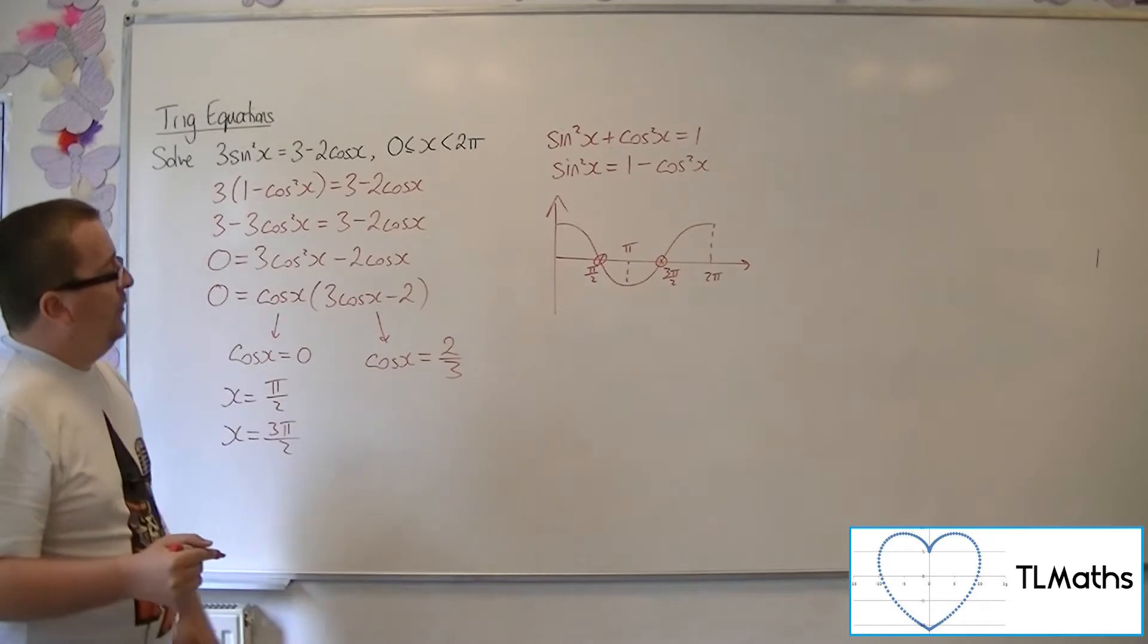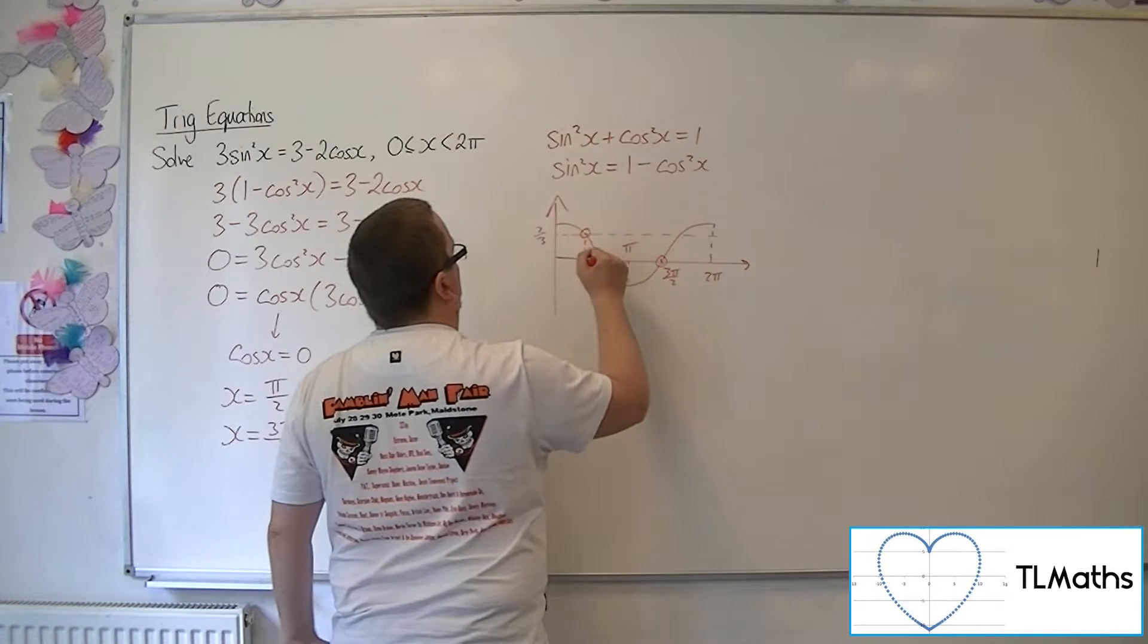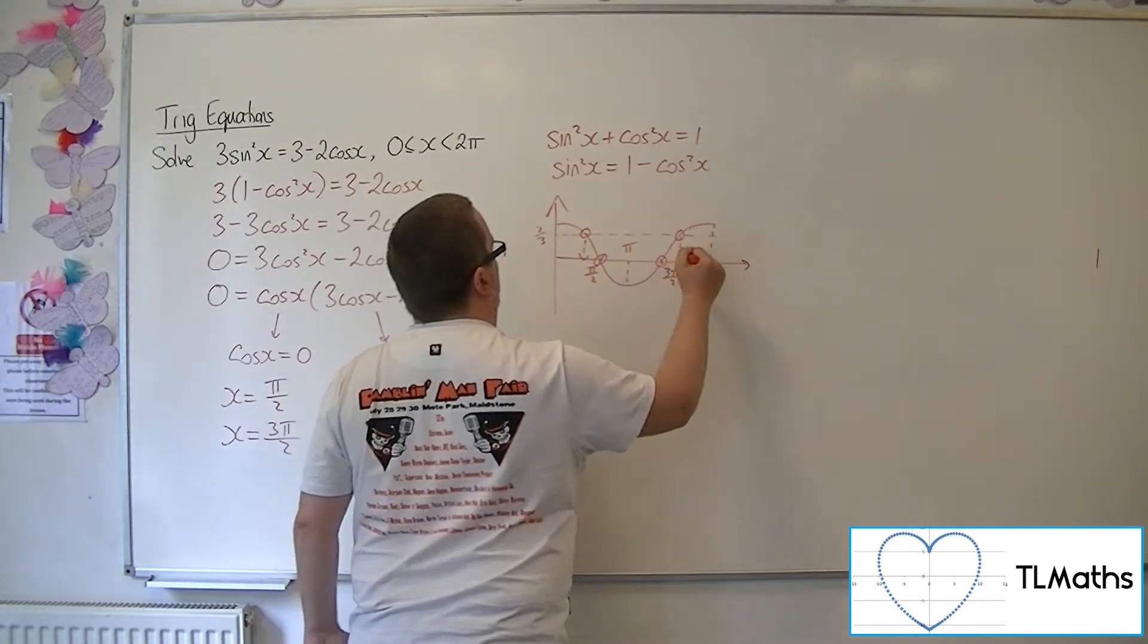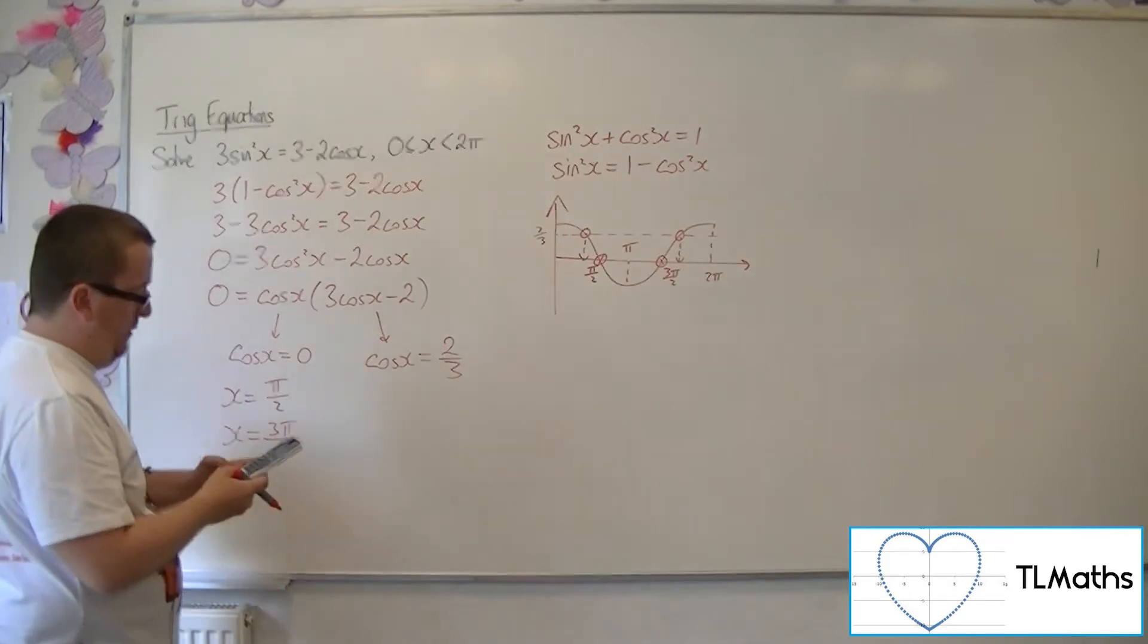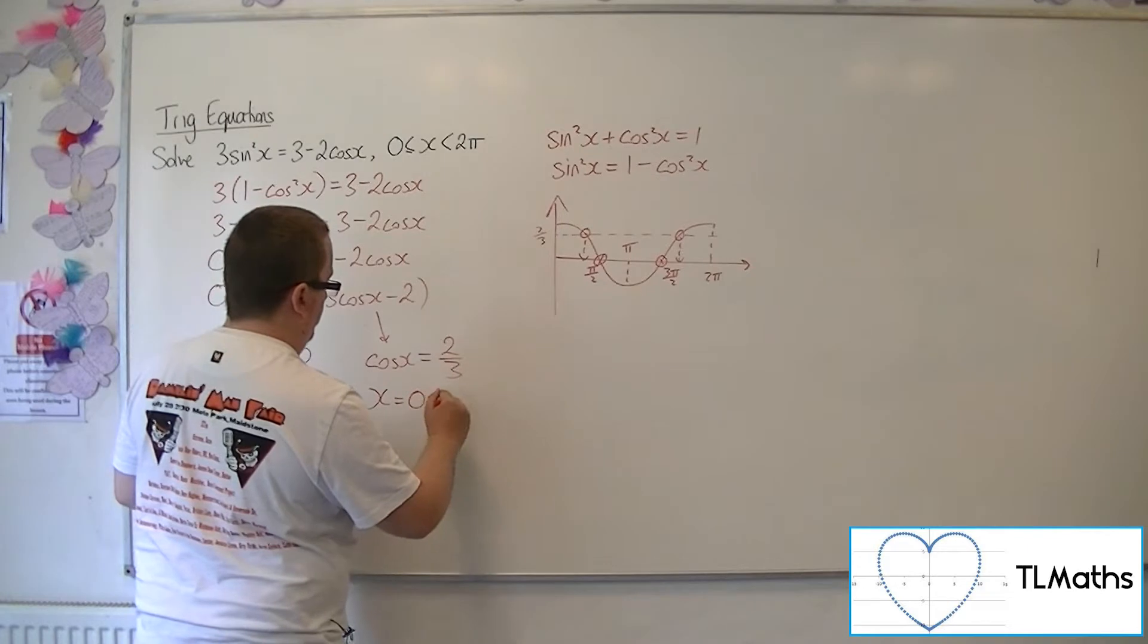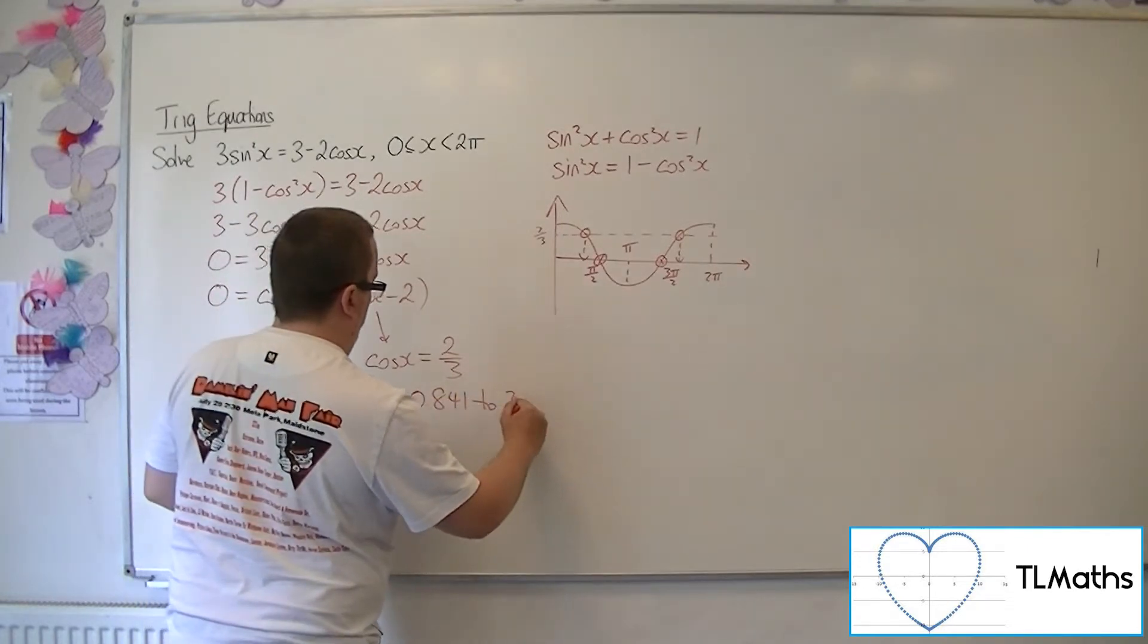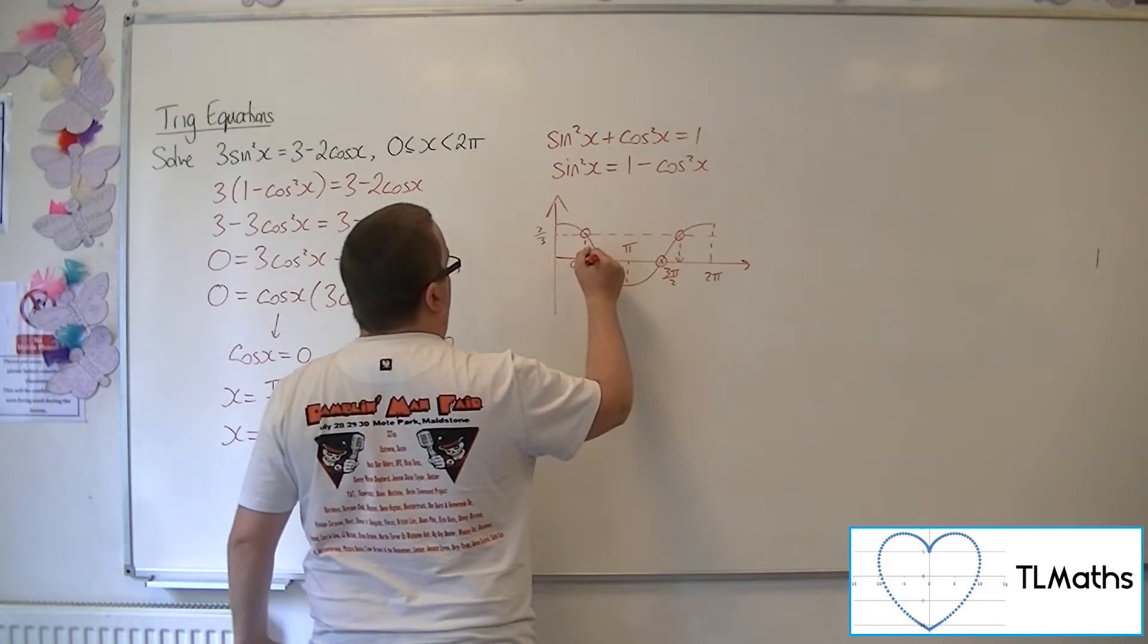As for cos x is 2 thirds, we would be expecting 2 solutions. So the first one will come from inverse cosine of 2 thirds, which is 0.841 to 3 significant figures.